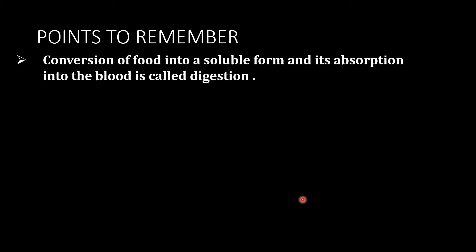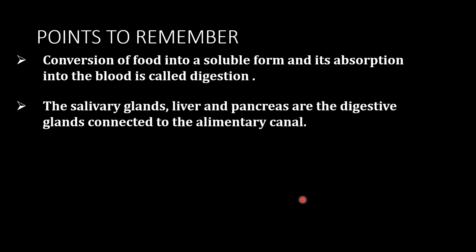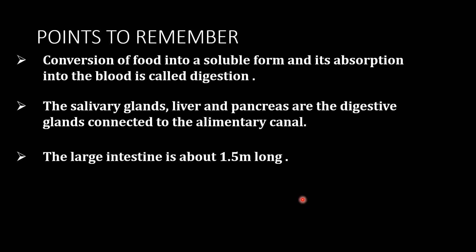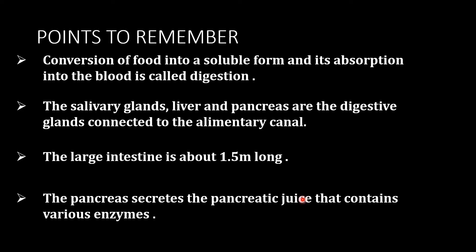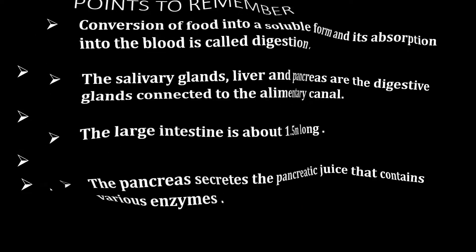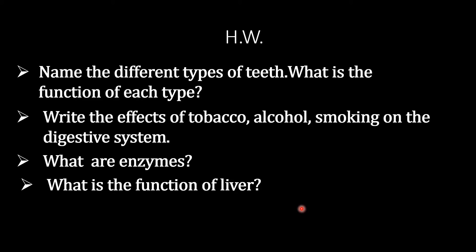Now let us review the points to remember: Conversion of food into a soluble form and its absorption into the blood is called digestion. The salivary glands, liver, and pancreas are the digestive glands connected to the alimentary canal. The large intestine is about 1.5 meters long. The pancreas secretes pancreatic juice containing various enzymes. For homework: name the different types of teeth and the function of each type; write the effects of tobacco, alcohol, and smoking on the digestive system; and explain what enzymes are and the function of bile.